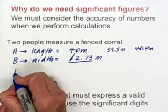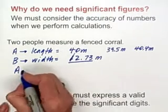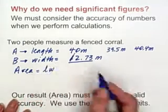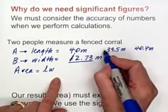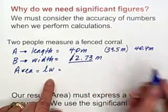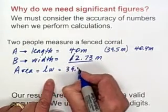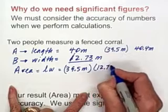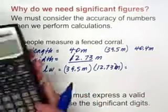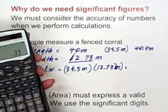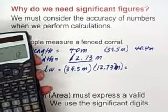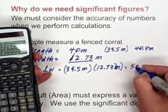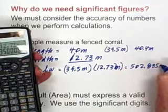This one here also could be out a little bit, but let's assume that person B has told us, yes, this is definitely 12.73 meters, no question about it. Now, let's say we want to calculate the area of this fenced corral. To calculate the area, we multiply length times width. Let's try the first length that it may be, 39.5 meters. And let's multiply it by the 12.73 because we've been told that that's an accurate measurement. So we would end up with 39.5 times 12.73. We'd end up with 502.835 meters squared.